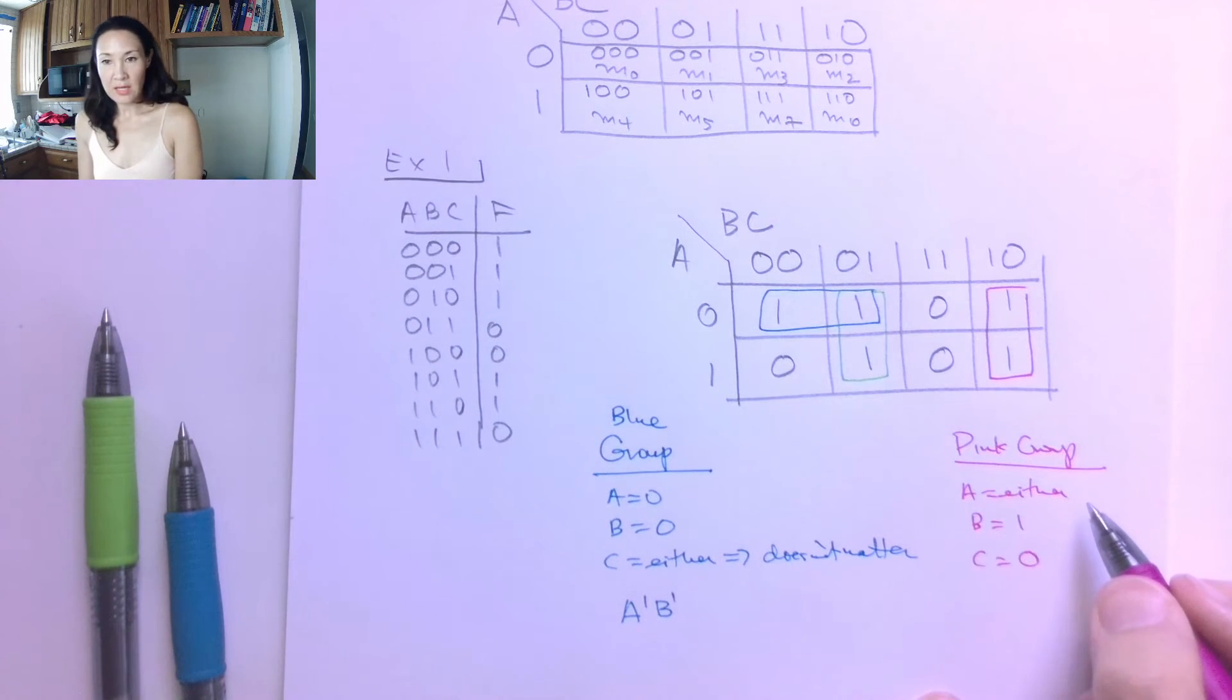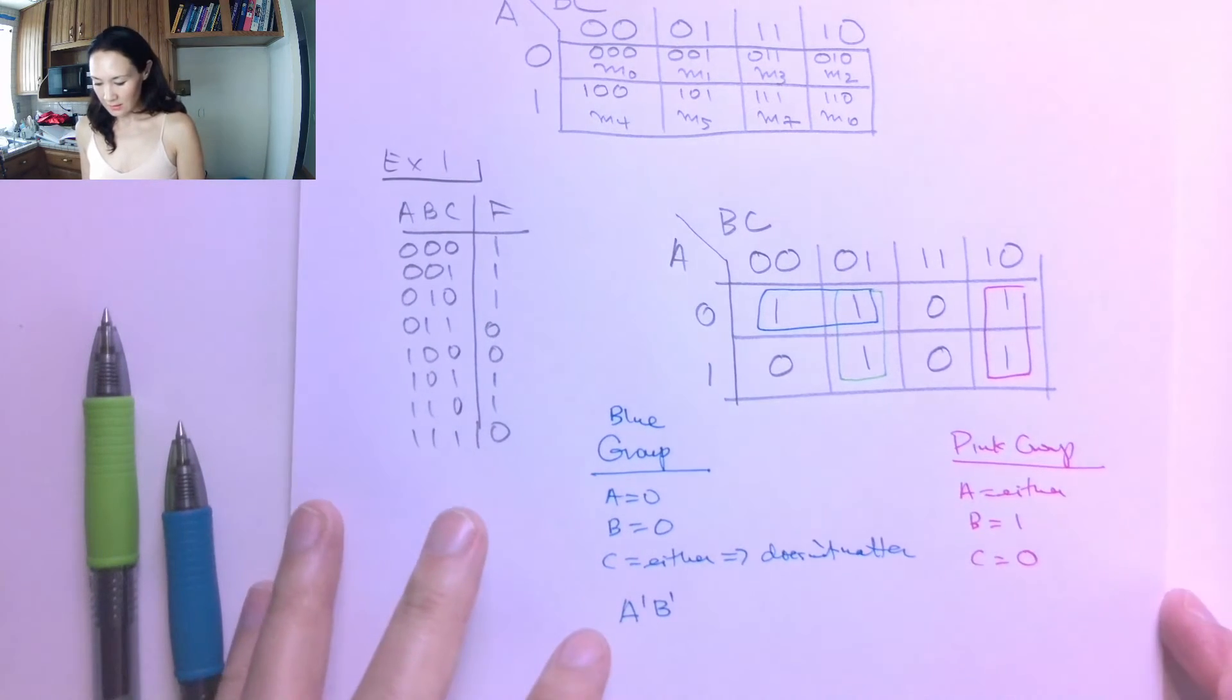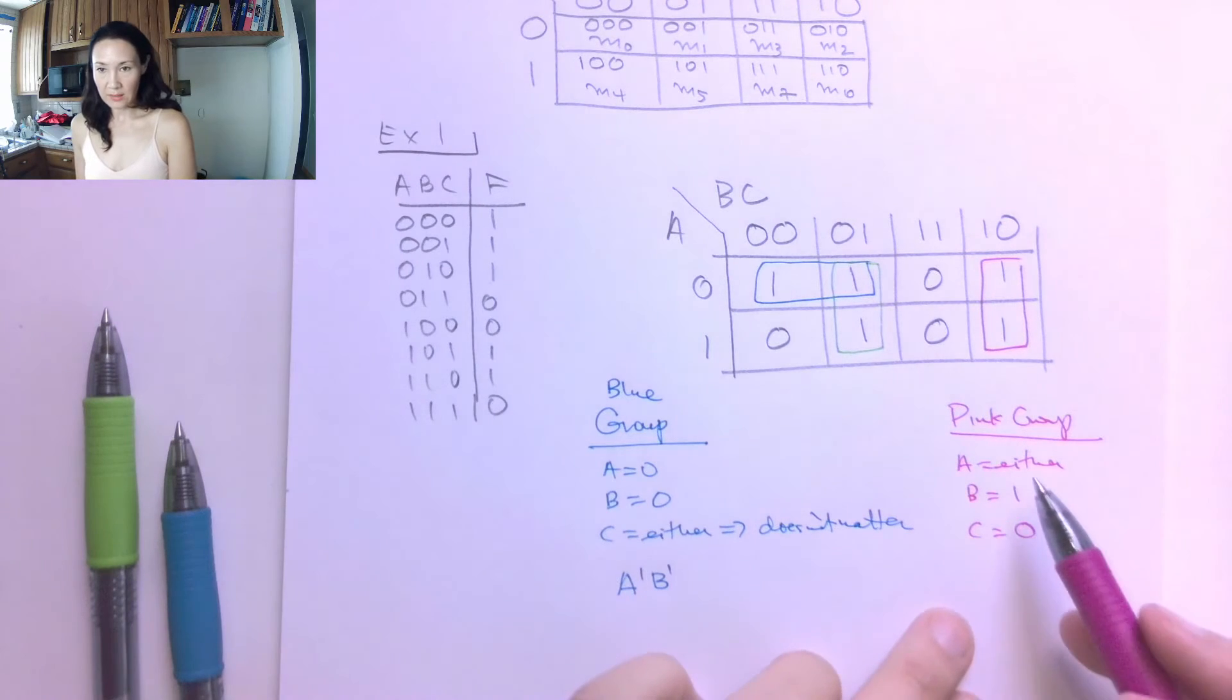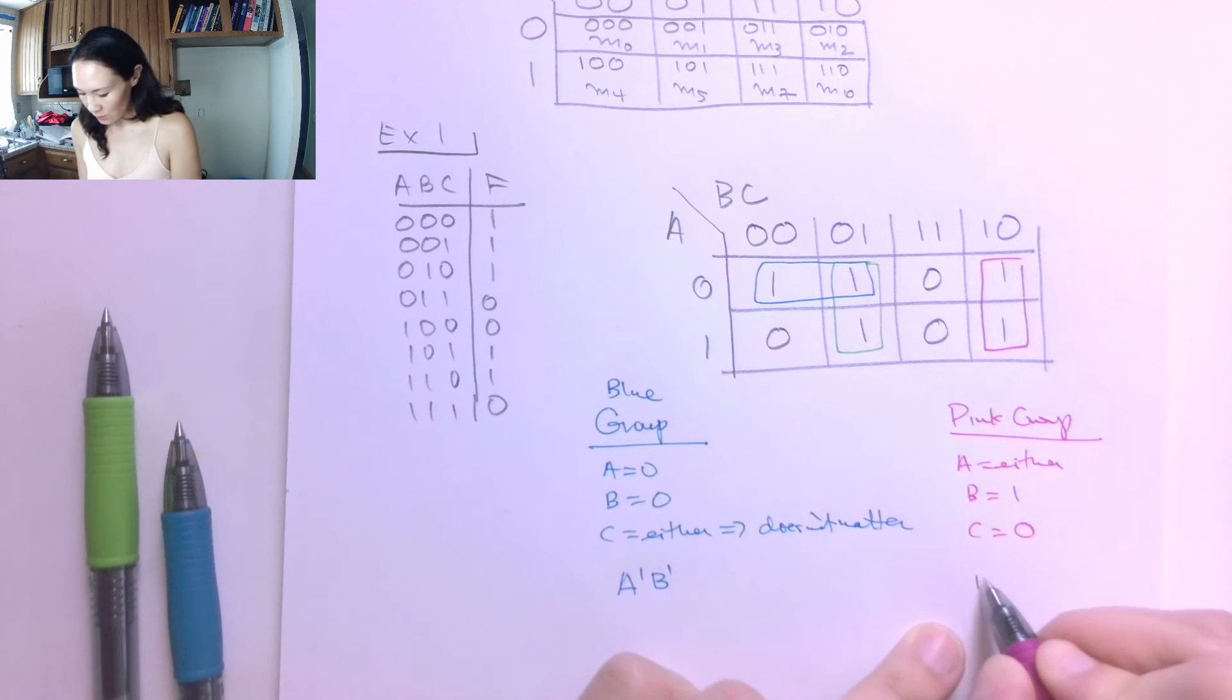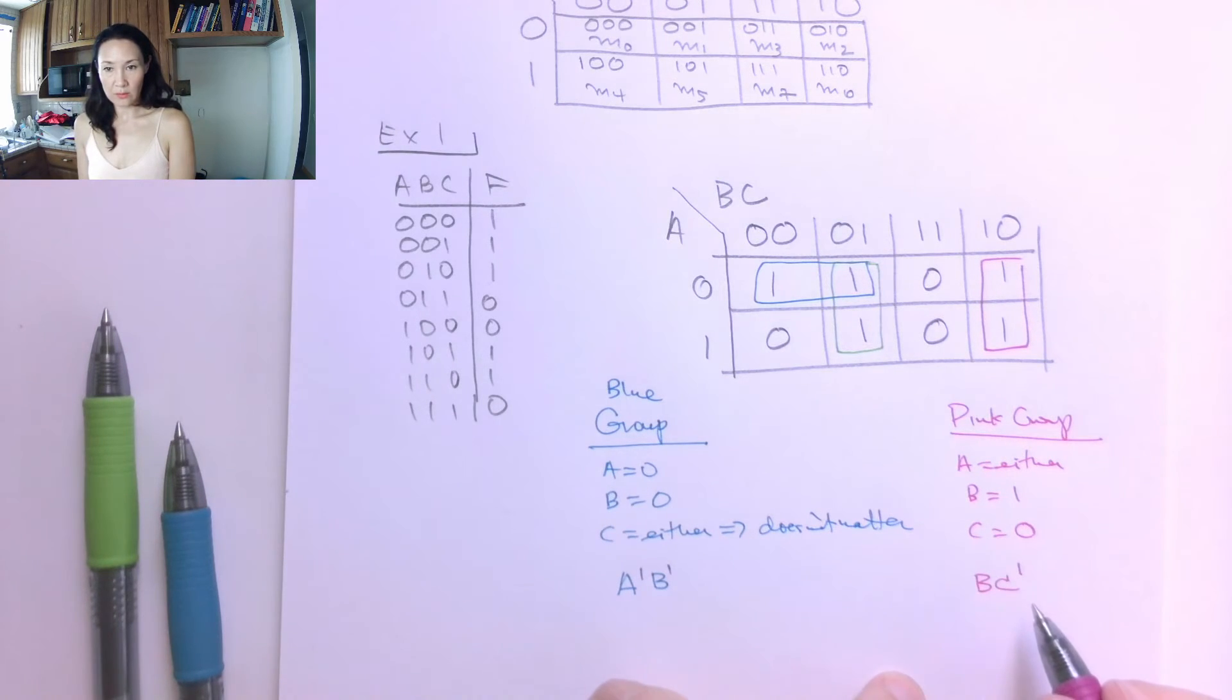So if a can be either, that means it's kind of not necessary to put it into our product, because it doesn't matter. But we do need that b is true and c is false. So these are how we write the literals here.